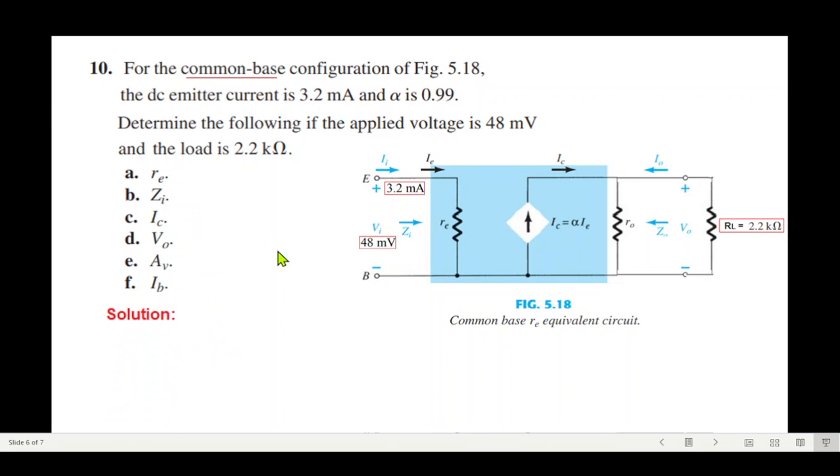First of all, re. You can see from here that in this case this current is ie and this is re. re is actually nothing but zi input, and zi or re we can find from here directly: voltage divided by this current will be re. re is voltage input divided by input current. It will be 15 ohm.